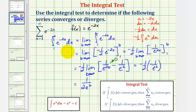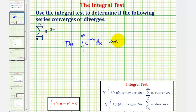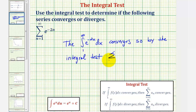Let's summarize our results. The integral from one to infinity of e raised to the power of negative two x with respect to x converges, so by the integral test, our infinite series also converges.